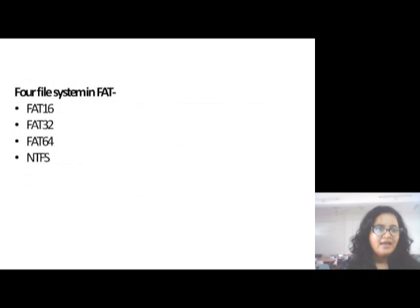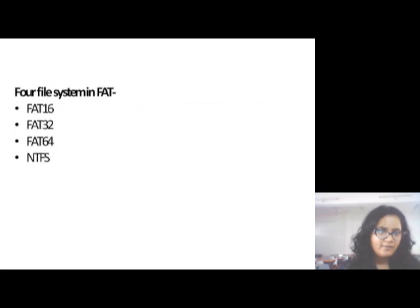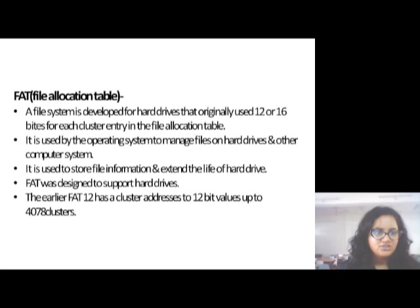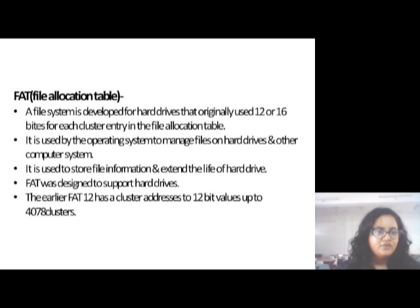Now, what is FAT? FAT means File Allocation Table. The file allocation table is divided into four parts: FAT12, FAT16, FAT32, and NTFS. A file system developed for hard drives that originally used 12 or 16 bits for each cluster entry in the file allocation table. It is used by the operating system to manage files on hard drives and other computer systems.